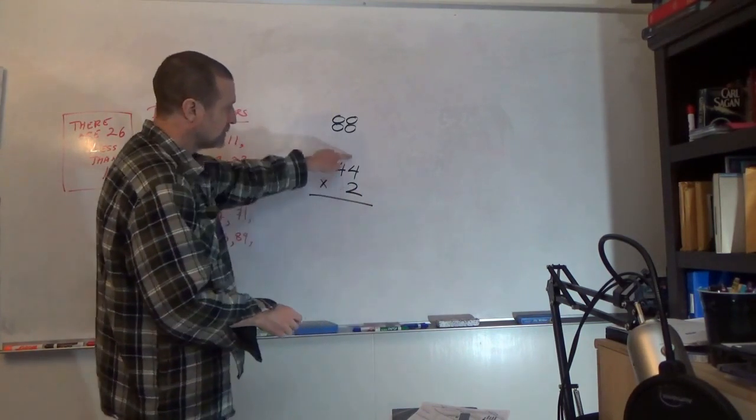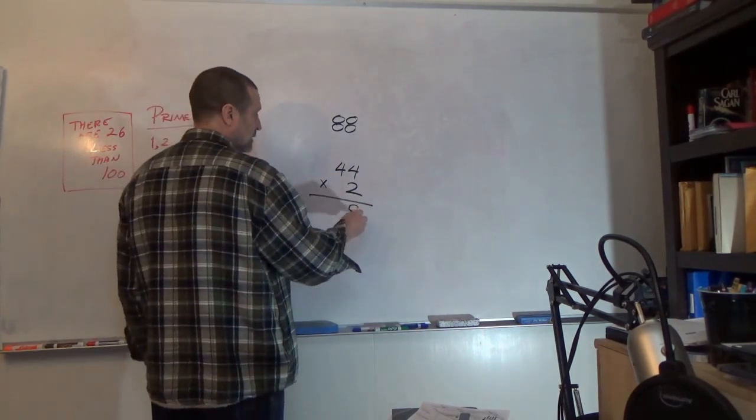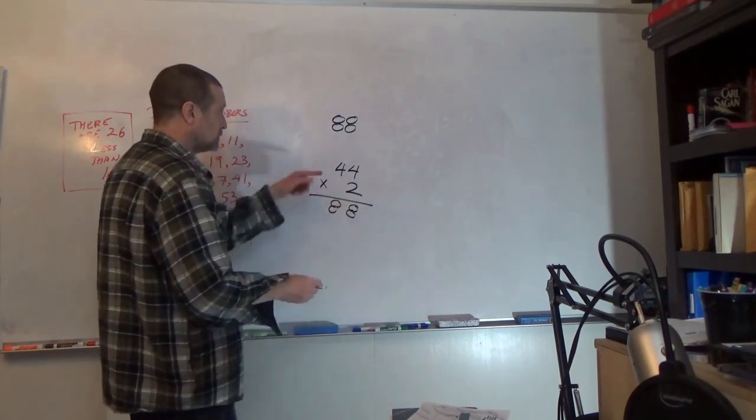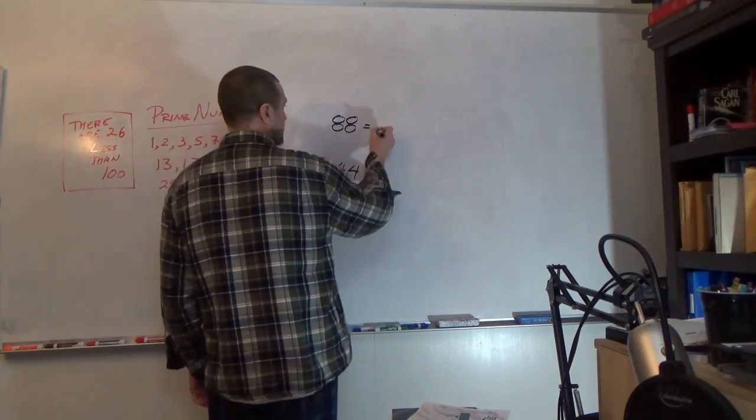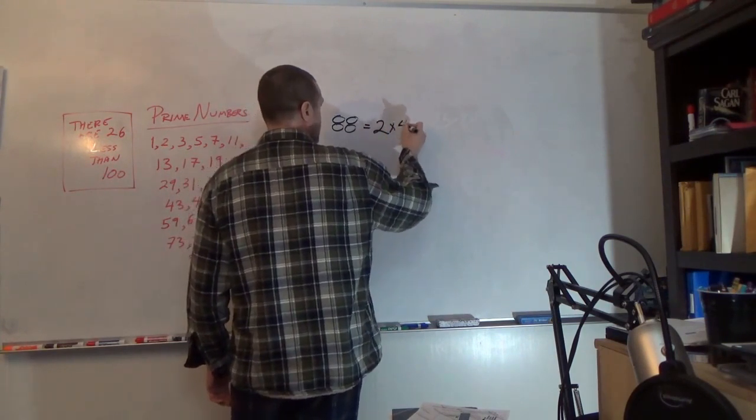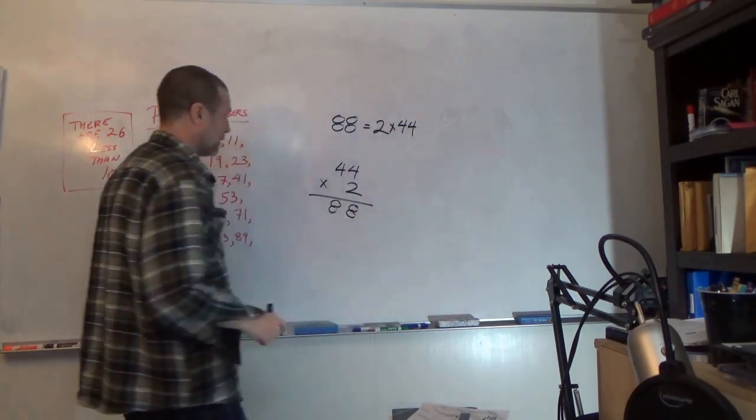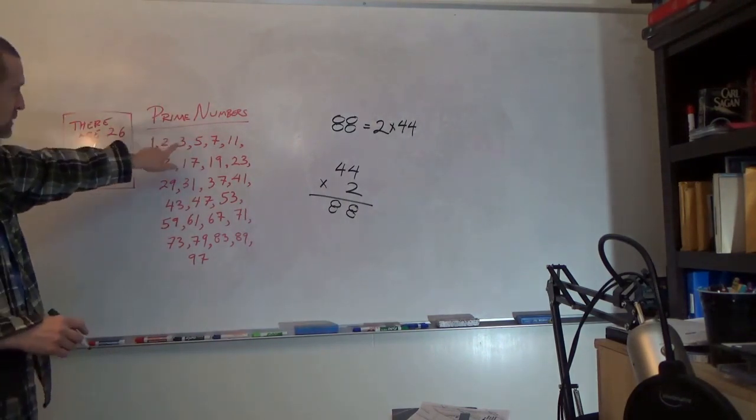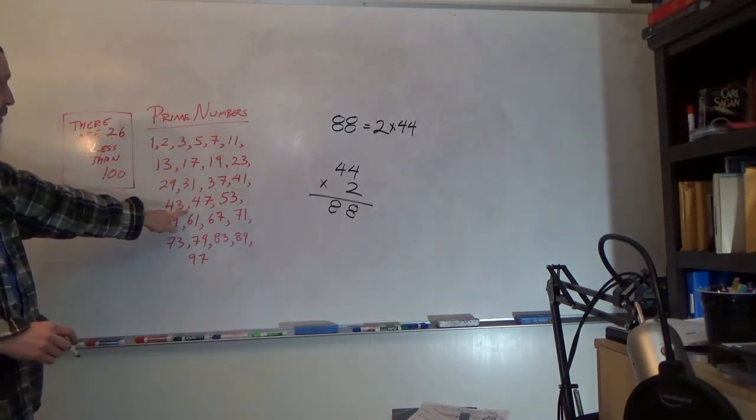So we know that 2 times 44 is 88. Now, 2 is a prime number, but 44 is not.